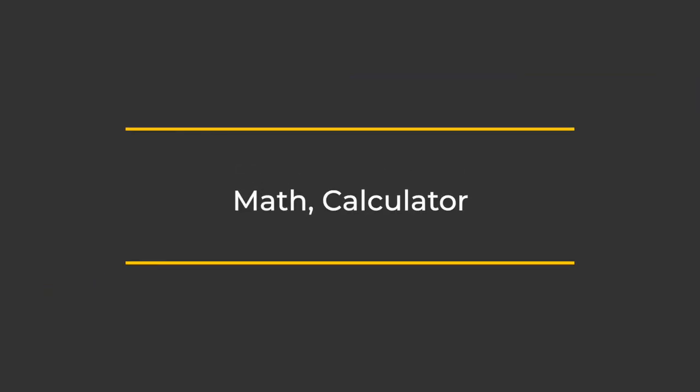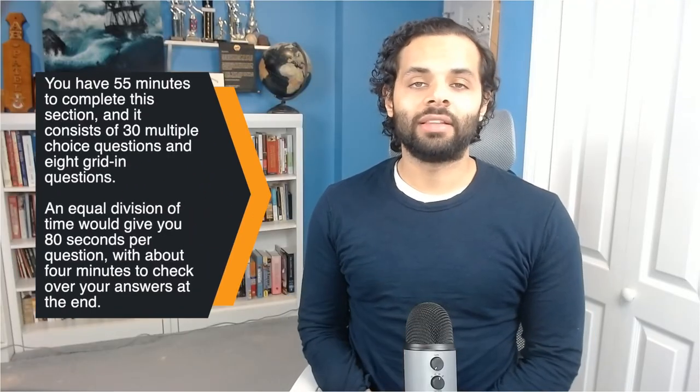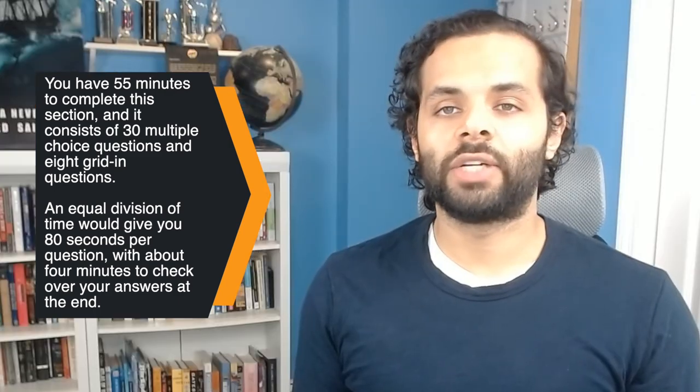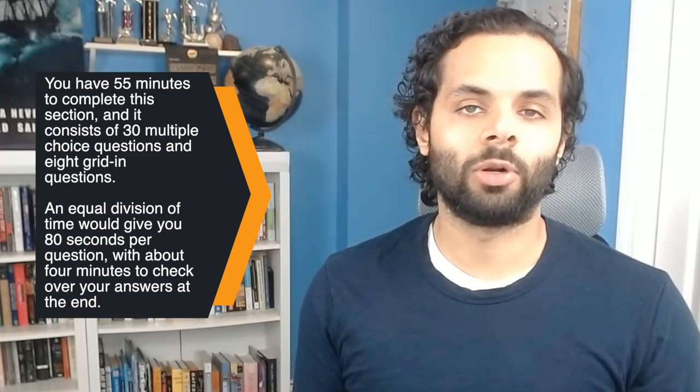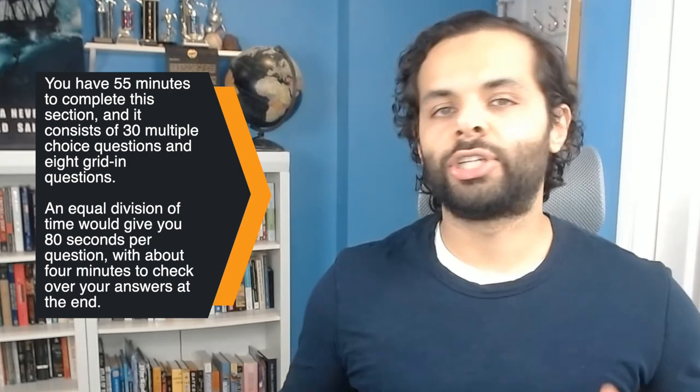The math calculator section is also arranged by order of difficulty, with the most challenging questions at the end. You will have 55 minutes to complete this section, which consists of 30 multiple choice questions and 8 grid-in questions. An equal division of time gives you about 80 seconds per question, with about 4 minutes to check your answers at the end. When possible, try to spend closer to 65 to 70 seconds on each question so you can devote more time to the more complex questions at the end.